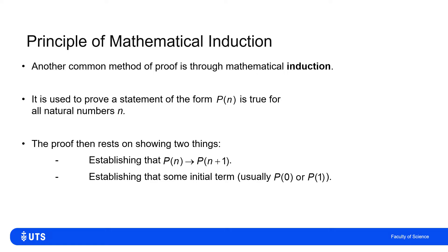Once we've established it's true for some starting point, and p(n) implies p(n+1), if we've proven the first case that implies the second, the second implies the third, the third implies the fourth. Once we've shown it's true for some starting point, we've shown it's true for all positive integers.